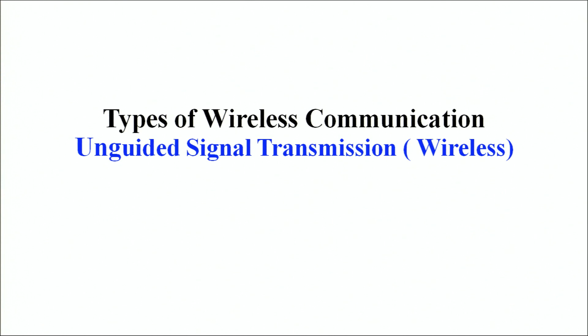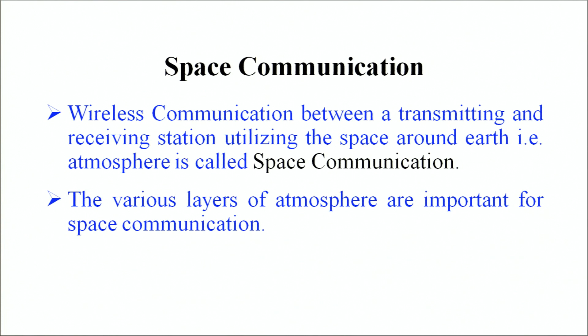Let us talk about different types of wireless communication system, that is unguided signal transmission. When we say unguided signal transmission, it simply means that the signals will not be communicated via some material medium. The space communication or wireless communication basically implies that the information is being transmitted by the transmitter and the receiving station utilizing the space around the earth. We are using the atmosphere, and that's why it is also called space communication. The various layers of the atmosphere play a very important role for space communication.